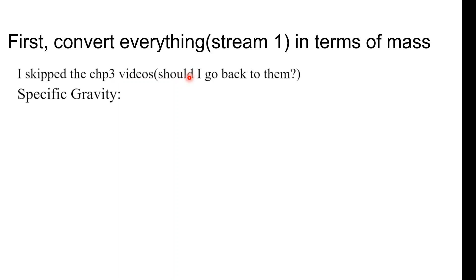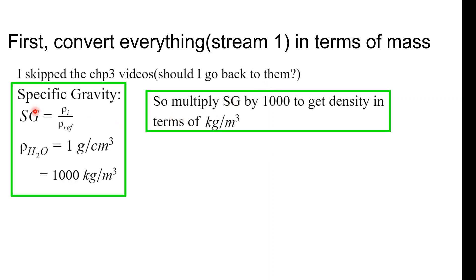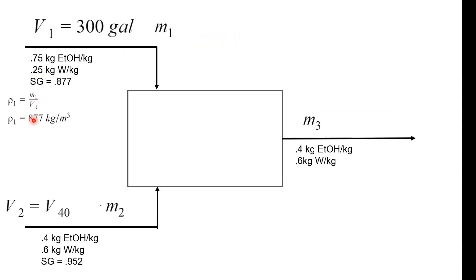So, I skipped the chapter three videos in terms of describing what specific gravity is. I don't know if you guys want me to go back to them, because I feel like it's a little tedious, and I think the bulk of this course is chapter four, mass balances. Anyway, the definition of specific gravity is the density of the substance you're looking at, with respect to the density of a reference, which is going to be water, which is one gram per centimeter cubed, or a thousand kilograms per meter cubed. So, if you do the math, you can multiply the specific gravity by a thousand to get the density in terms of kilograms per meter cubed. And so, we can calculate everything in terms of densities. We can turn it into mass, right? So, if you know the volume and you know the density, convert it into mass. And if you don't know this conversion factor, do go ahead and review chapter two, because chapter two is the fundamentals of the fundamentals. And if you're not comfortable with the fundamentals of the fundamentals, you're probably going to have a harder time with the fundamentals, which is chapter four of this class.